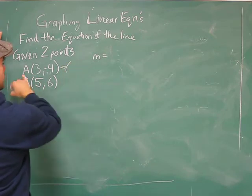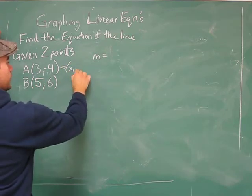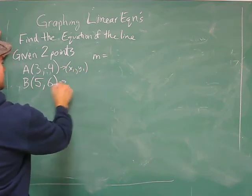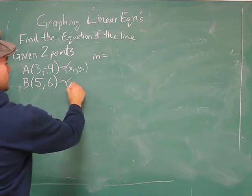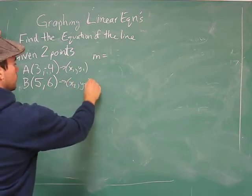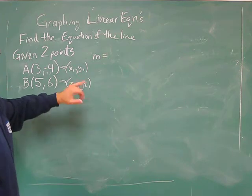We can pretend this is our first point, let's call that one x1 comma y1. And this is our second point, let's call that x2 comma y2. Makes sense, first point, second point.